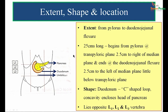Moving to extent, shape, and location: the duodenum extends from the pylorus of the stomach to the duodeno-jejunal flexure, measuring 25 centimeters in length. It begins at the pylorus at the transpyloric plane, 2.5 centimeters to the right of the midline, and ends at the duodeno-jejunal flexure 2.5 centimeters to the left of the median plane, slightly below the transpyloric plane. The complete duodenum lies opposite the levels of L1, L2, and L3 vertebrae.